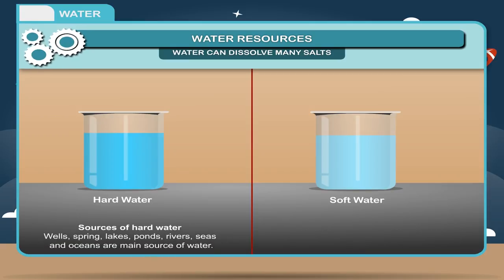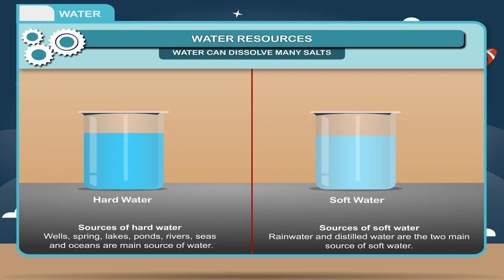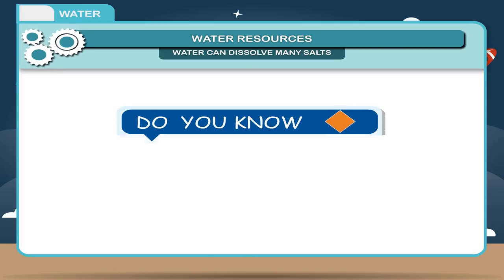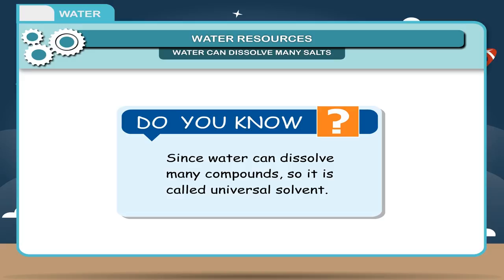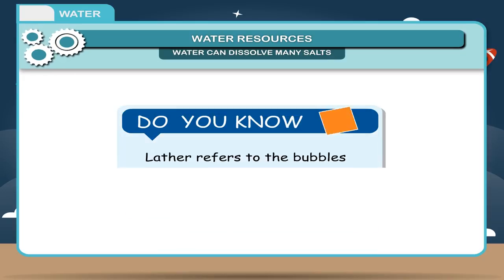Sources of hard water: wells, springs, lakes, ponds, rivers, seas, and oceans are the main sources of hard water. Sources of soft water: rain water and distilled water are the two main sources of soft water. Since water can dissolve many compounds, it is called a universal solvent. Lather refers to the bubbles that form when we add soap to water.